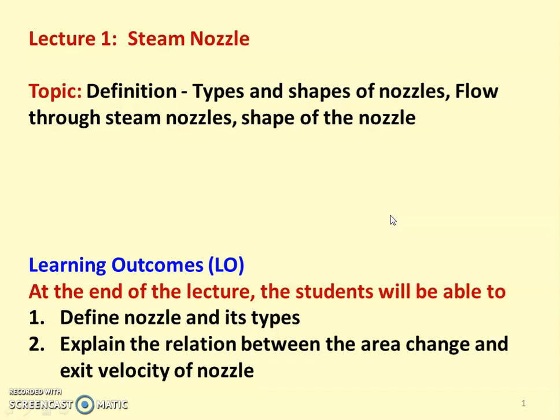Learning outcomes for students: at the end of the lecture, the students will be able to define the nozzle and its types, and explain the relation between area change and the exit velocity of the nozzle.